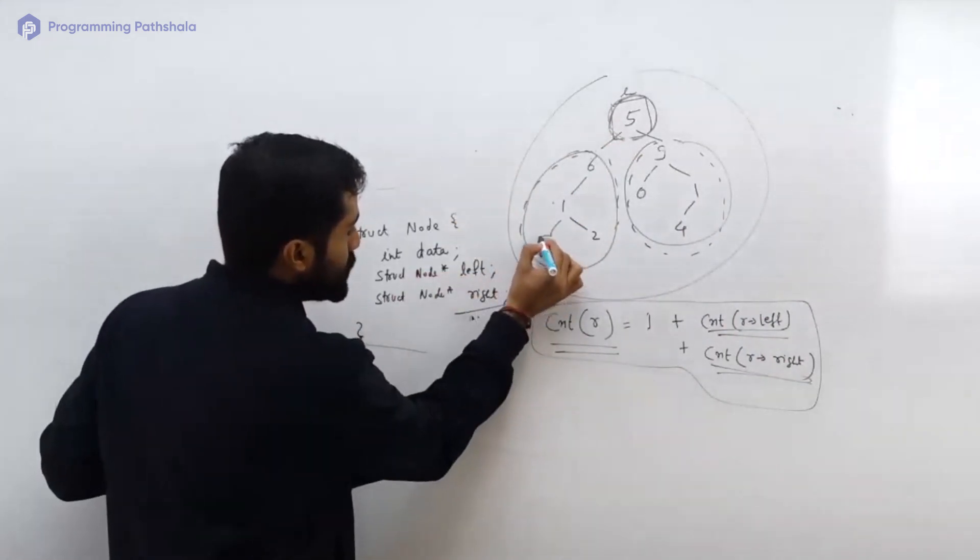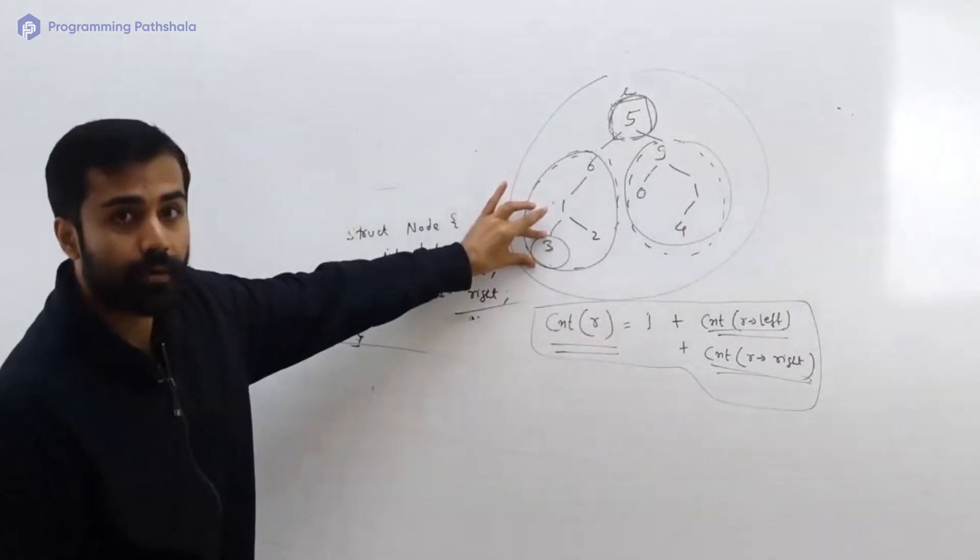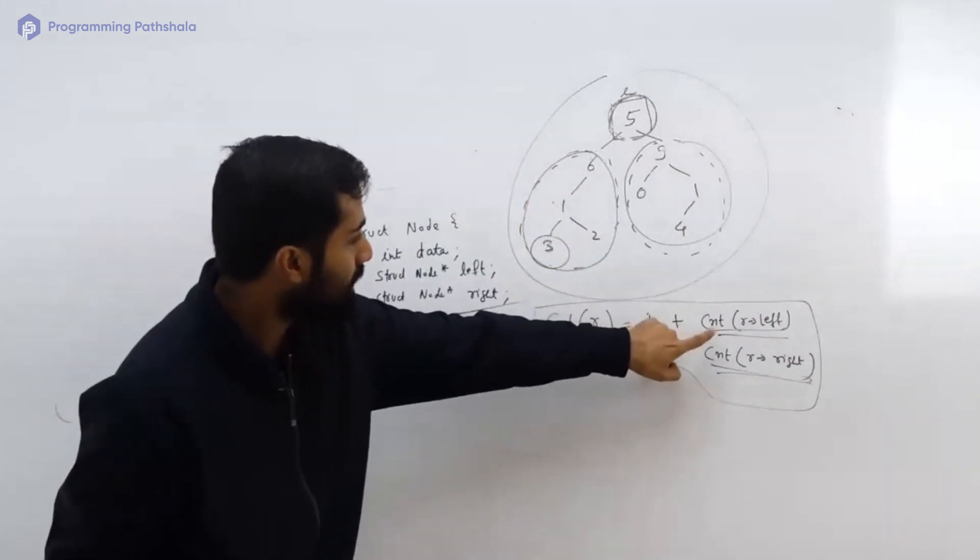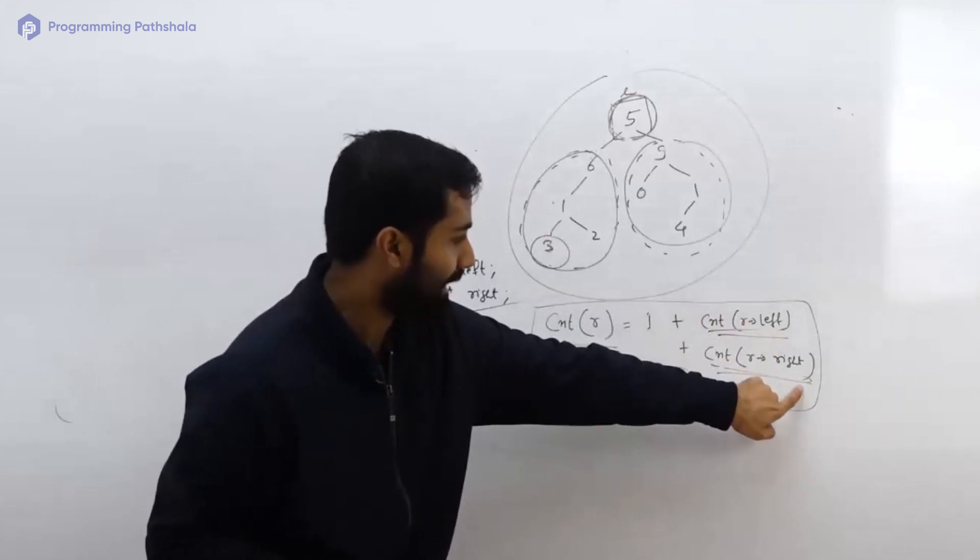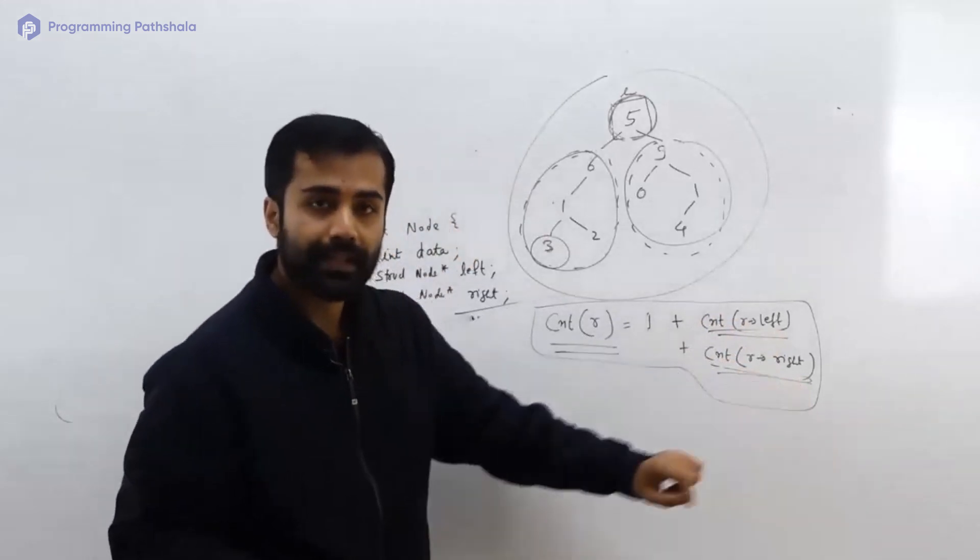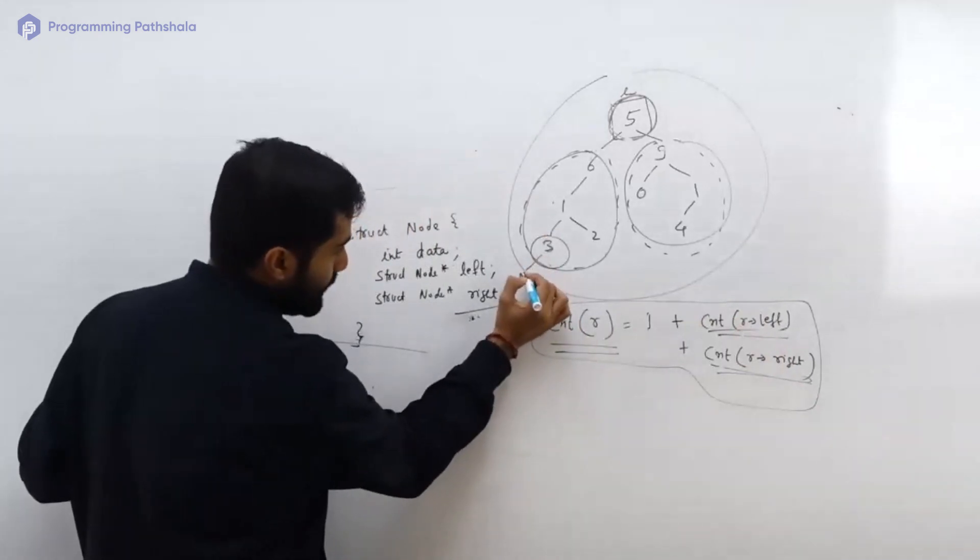If you have to count the number of nodes and you say it will be 1 plus count of root.left plus count of root.right, then what will happen is count of root.left means you will go to null because root.left is null, and count of root.right would also mean that you would go to null.